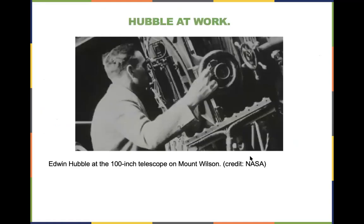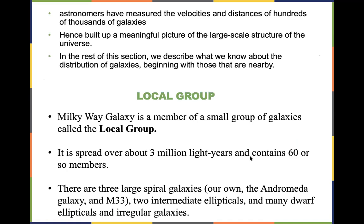Edwin Hubble used a 100-inch telescope for his observations. Astronomers have now measured the velocities and distances of hundreds of thousands of galaxies, building up a meaningful picture of the large-scale structure of the universe. The Milky Way is a member of a small group of galaxies called the Local Group, which spreads over about 3 million light years and contains around 60 members, including three large spiral galaxies, two intermediate ellipticals, and many dwarf ellipticals and irregular galaxies.